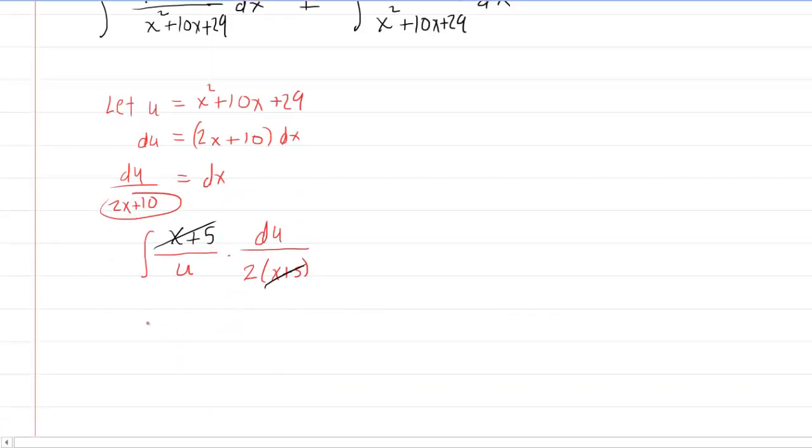And then to continue integrating, we can see that we have a factor of one half that we can remove to the outside of the integral. And then we're left with 1 over u du. Now we all know that when we integrate this, we're going to get one half times the natural log of the absolute value of our u. And our u was this quadratic right here. So that completes the first of two integrals.